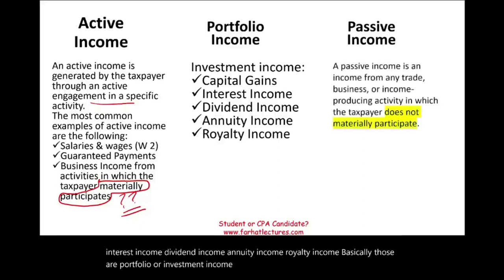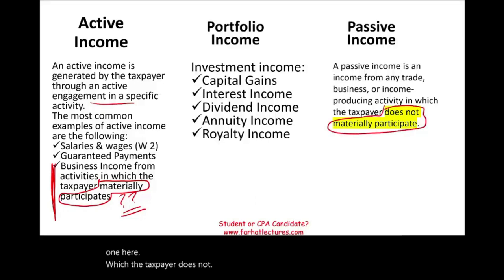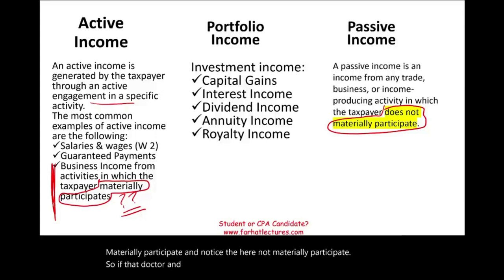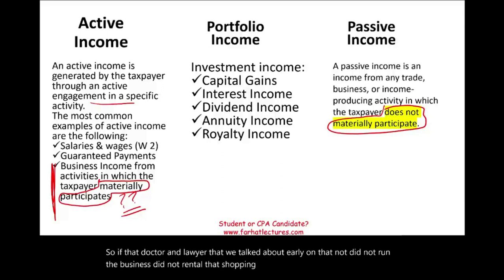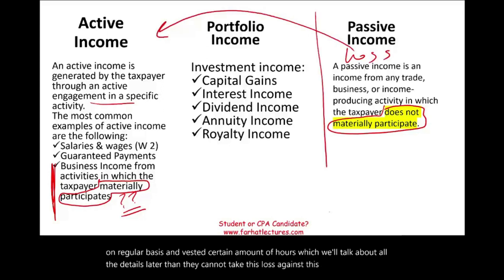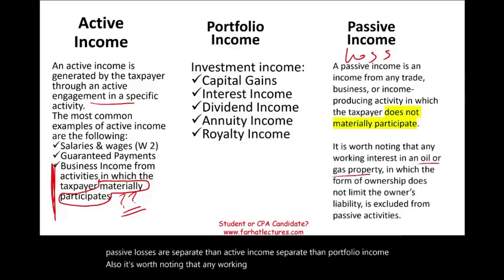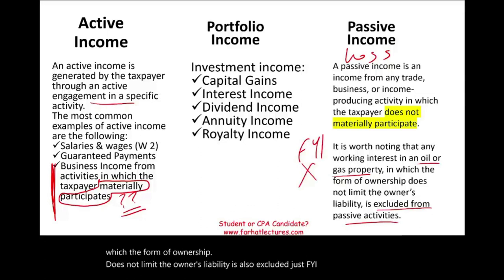Passive income is income from any trade or income-producing activity in which the taxpayer does not materially participate. So if that doctor and lawyer we talked about earlier did not run the business, did not manage the shopping center, were not there on a regular basis and did not invest the required hours — then they cannot take that loss against their other income. Passive losses are separate from active income and separate from portfolio income. Also worth noting: any working interest in an oil or gas property in which the form of ownership does not limit the owner's liability is also excluded.